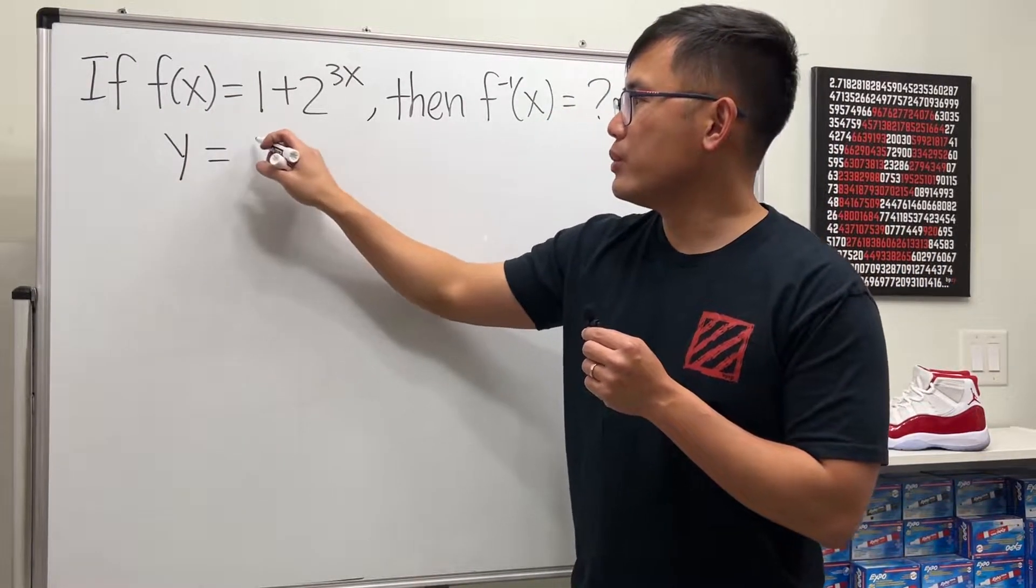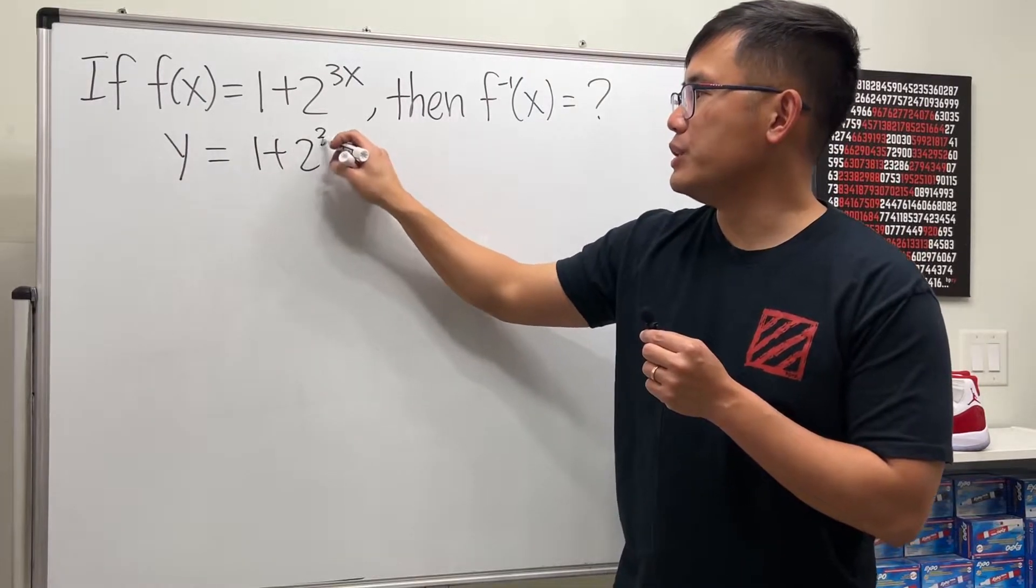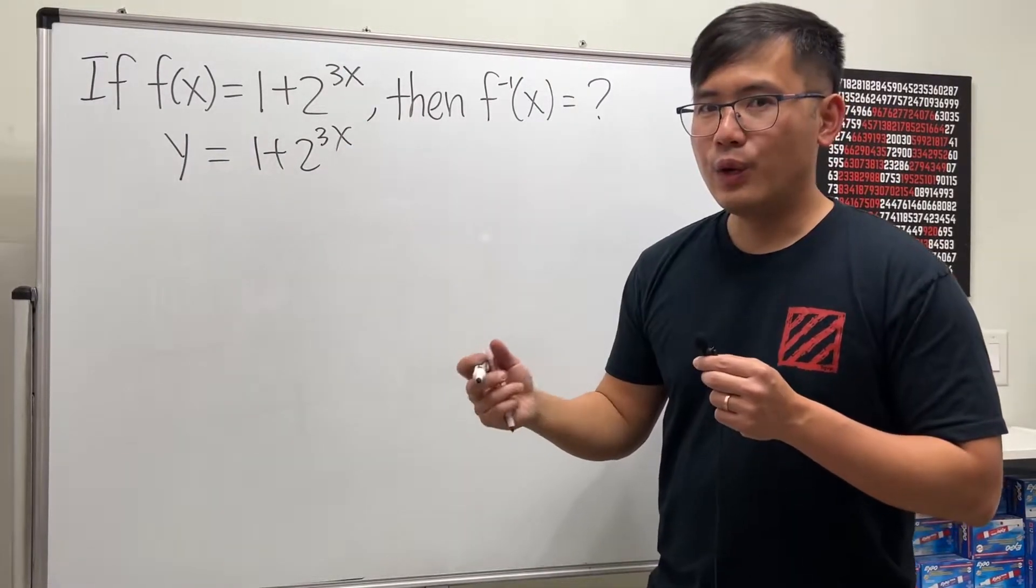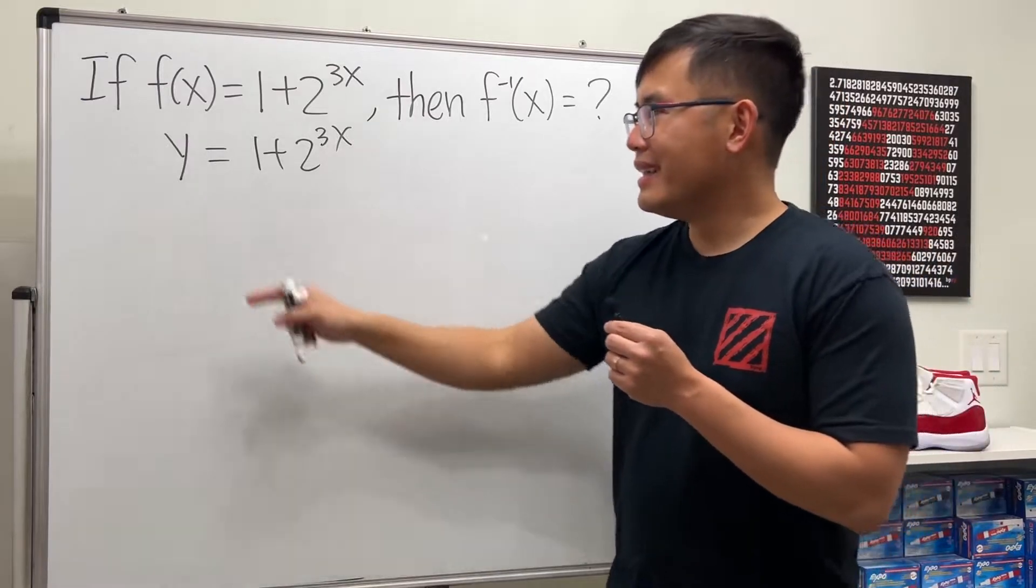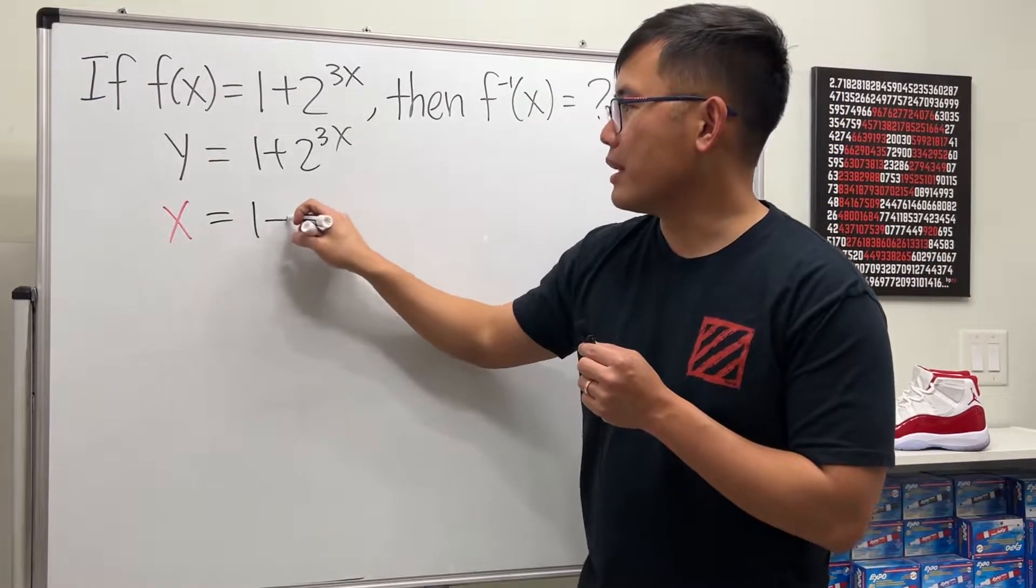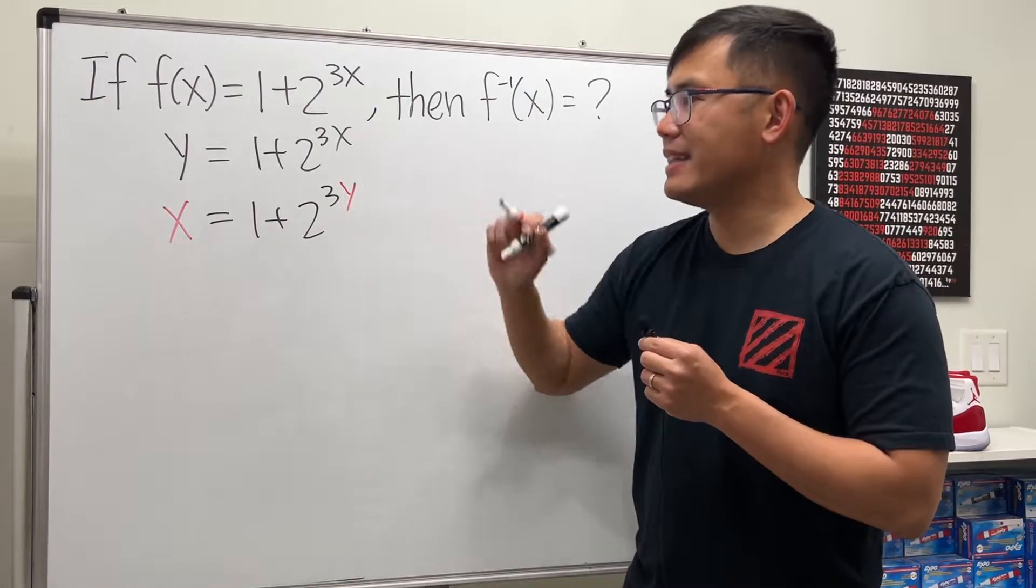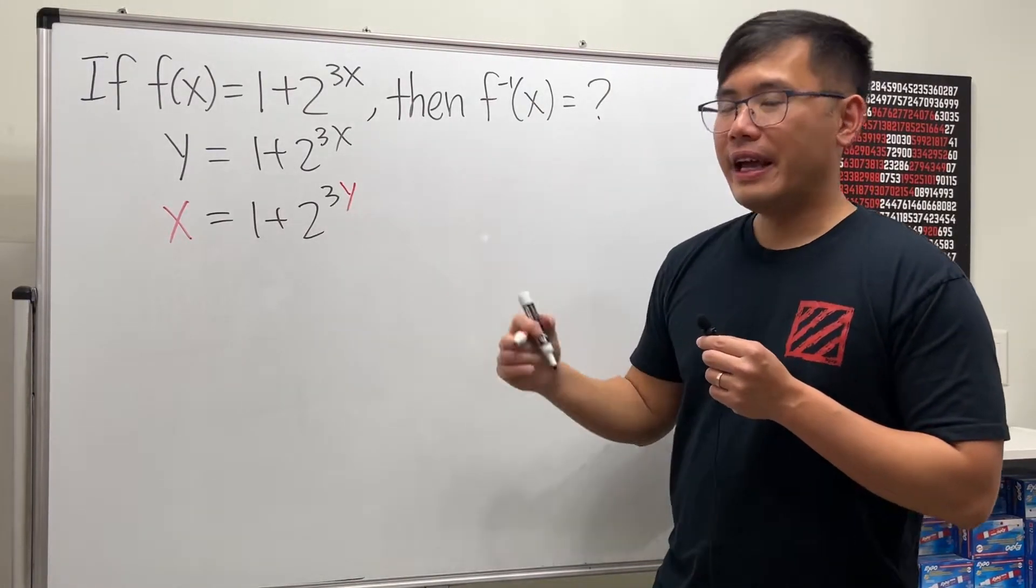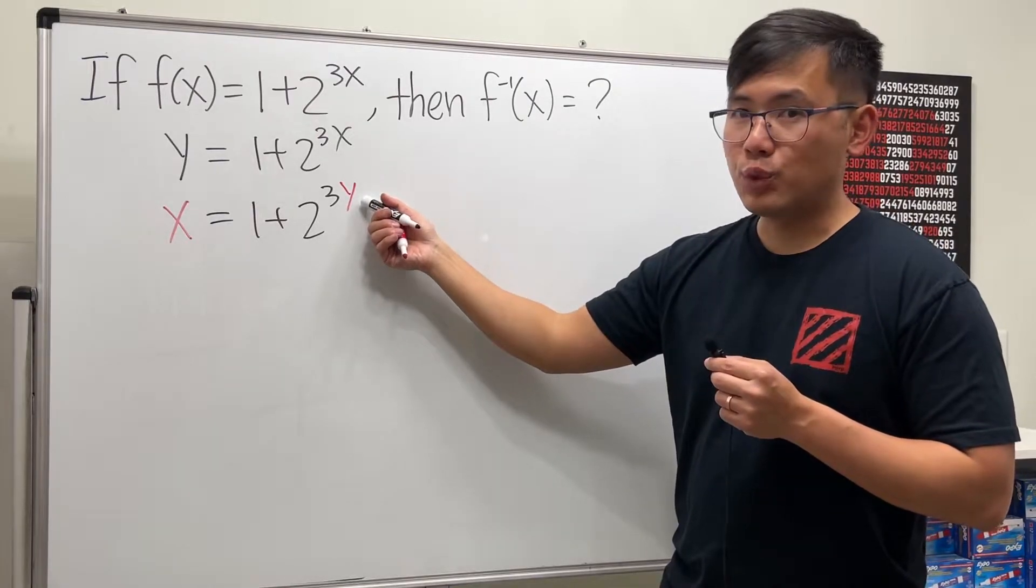So we have y equals 1 plus 2 to the 3x, then we swap x and y. So this will be x and that will be equal to 1 plus 2 to the 3y. Change that to y and now we'll try our best to get this y by itself.